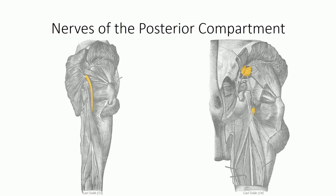Innervation to the posterior compartment is from the sciatic nerve. As previously stated, the sciatic nerve is actually a combination of two different nerve segments. The tibial portion innervates the hamstring muscle group, while the common fibular portion innervates the short head of the biceps femoris exclusively.